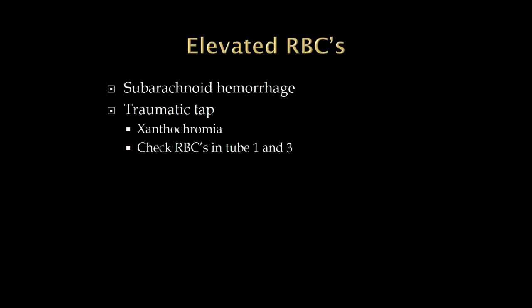The other distinguishing method: when we do a lumbar puncture, we usually have four tubes and the fluid slowly drips out. We'll ask the lab to analyze the number of red blood cells in the first tube and the third or fourth tube. If it's a traumatic tap, red blood cells will be a lot in the first tube and then less in the second, less in the third. If it's a subarachnoid hemorrhage, there's a lot of blood in the subarachnoid space and the red blood cells will be consistent in all of the tubes.